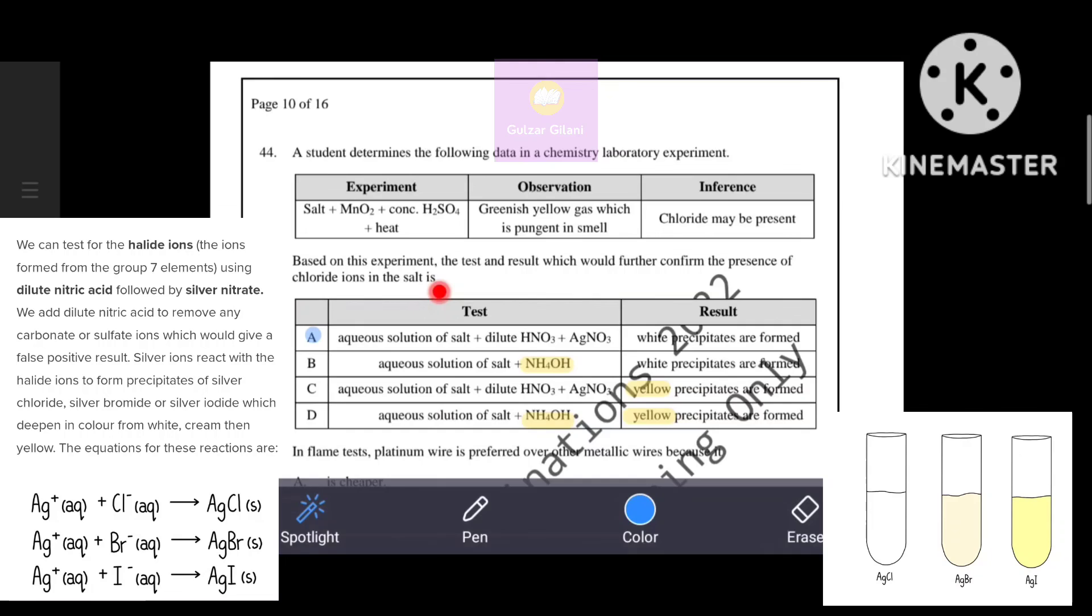Silver ions react with halide ions to form precipitates of silver chloride, silver bromide or silver iodide which differs in color from white, green to yellow precipitate. To confirm chloride ions, option A and option C represent correct test: aqueous solution of salt, dilute nitric acid plus silver nitrate. Silver chloride precipitates are white. Silver iodide precipitates are yellow. We need to confirm chloride ions, that's why option A is the correct answer.